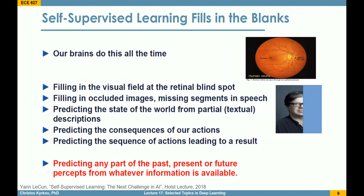There is a lot of motivation for this because it mirrors what our brains do. We fill in blind spots in the retina, imagine what occluded images look like with missing parts, recover text or speech by filling in missing words, predict consequences of our actions, and predict how sequences of actions lead to results. This idea of predicting something from the past, present, or future is quite powerful and can be used for computer vision and machine learning.